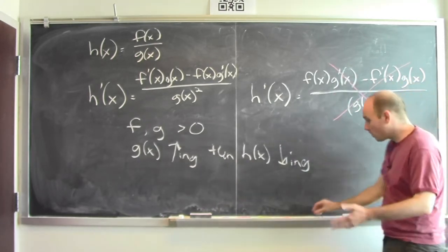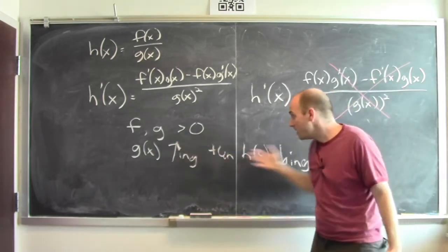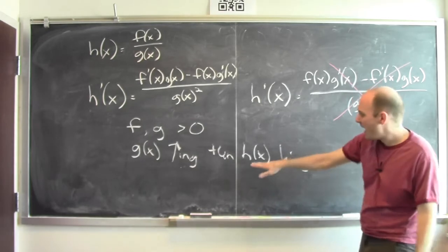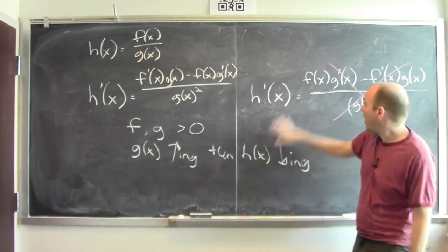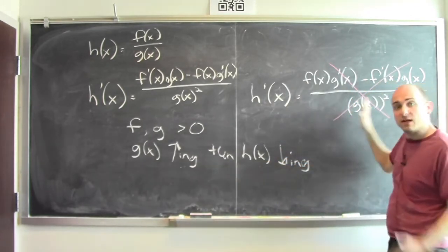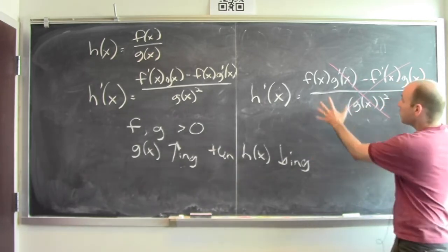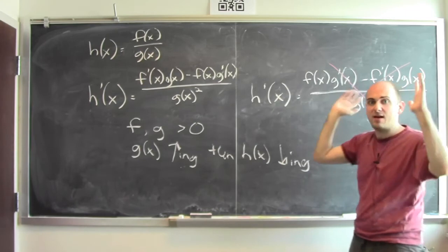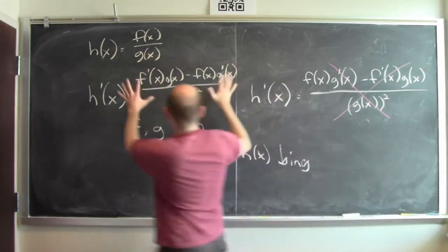Because it doesn't work correctly in one test case. When g is increasing and f isn't changing, h needs to be decreasing. If this were the quotient rule, it would be telling us exactly the opposite. It would be telling us that g increasing made h increase. That's nonsense. So in fact, this really is the quotient rule.